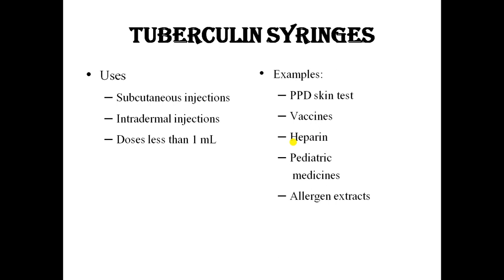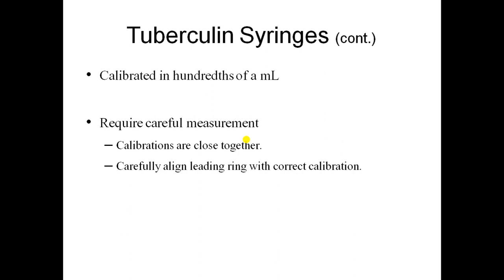The tuberculin syringe and insulin syringe look similar but are different — do not confuse them. The tuberculin syringe is used for subcutaneous and intradermal injections when the dose is less than 1 ml, for example for the PPD skin test, vaccines (0.1 ml or 1 ml doses), heparin, pediatric medications, and allergenic extracts.